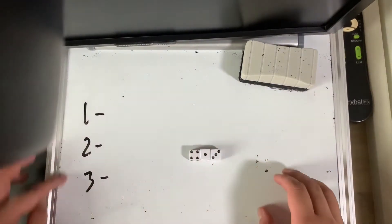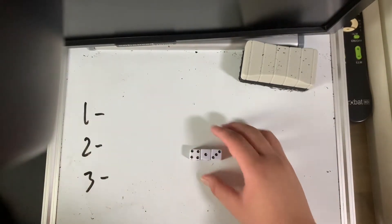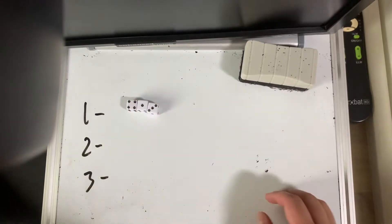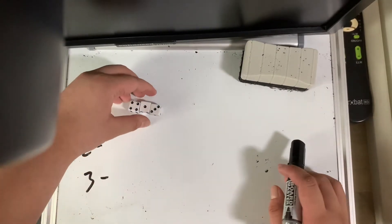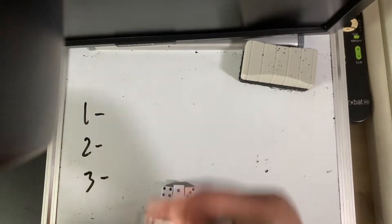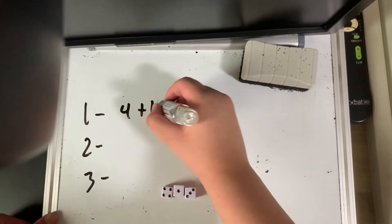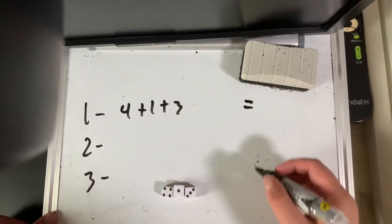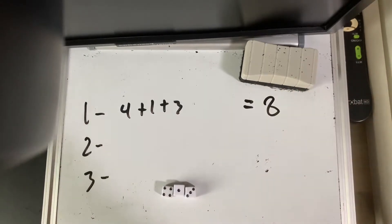First step - it comes in three steps by the way - is to add up all the numbers here, so add up all the numbers of the three dice. So it's going to be 4 plus 1 plus 3, then you get the sum that's going to be 8.